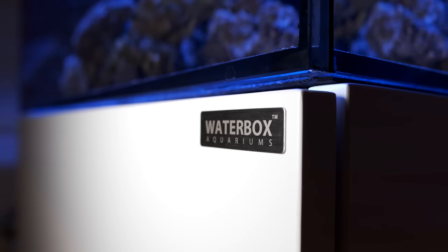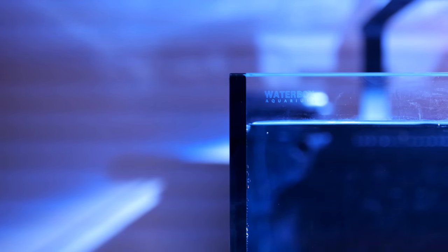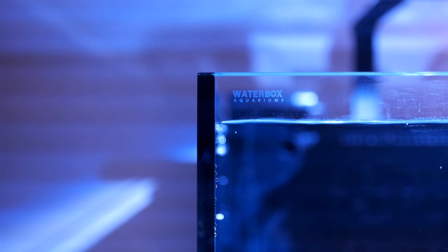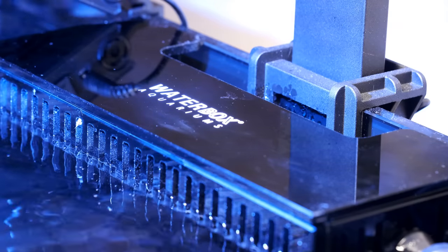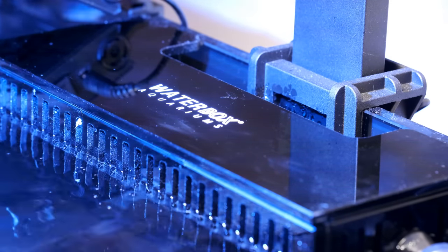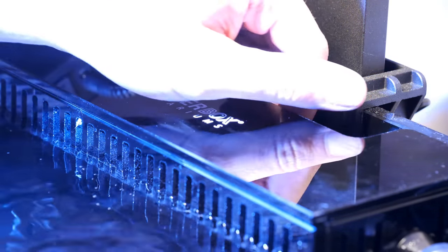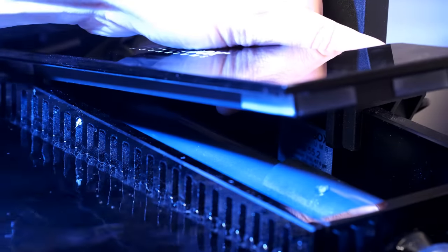As well as that, there are some nice finishing touches to the tank. The cabinet has a classy looking brushed metal Waterbox logo, and there's another Waterbox logo embedded in the glass at the top of the aquarium. And rounding things off, the lid for the weirbox is made of glass, which looks and feels great, and it has rubberized edges to hold it firmly in place.